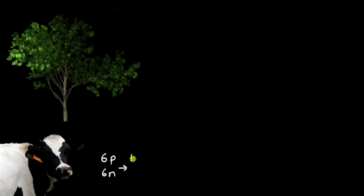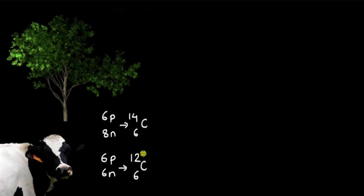It turns out that there is more than one form of carbon — there are different versions of the element carbon. Most carbon atoms have six protons and six neutrons, and this is carbon-12, written with 12 as the mass number and 6 as the number of protons. But some have 6 protons and 8 neutrons — this is carbon-14, because the total number of nucleons (the mass number) is 6 plus 8, which equals 14. Carbon-12 is present in the highest amount, but some carbon atoms in the atmosphere are also carbon-14.